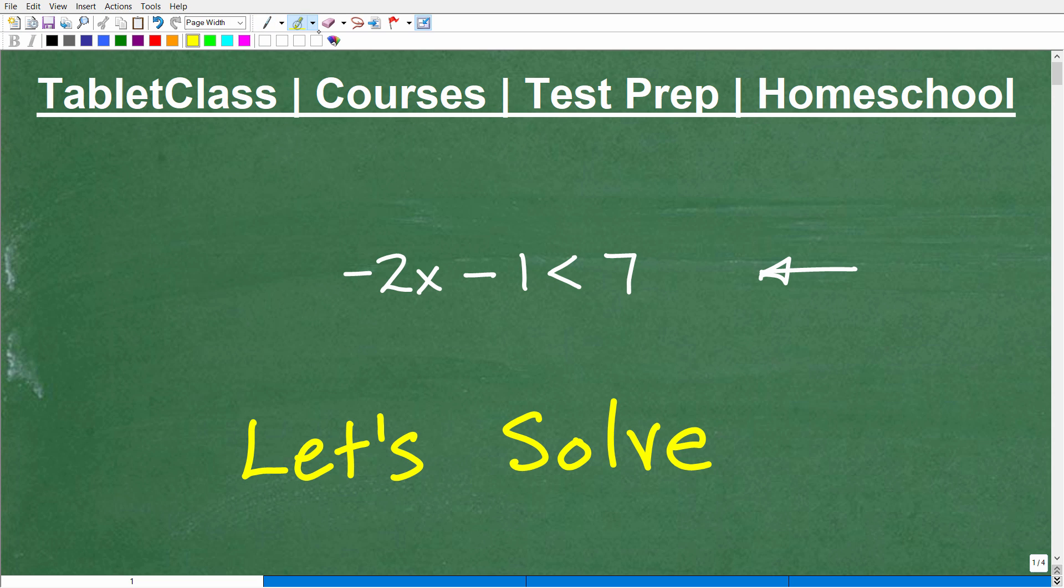Okay, so what is it? Well, this little symbol right there tells us what this is. We've got an x in here, so we know we're dealing with algebra. We've got a variable. But this is an inequality.